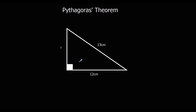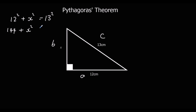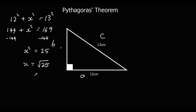Here's a different example. The long side is C, and the other two are A and B. So 12 squared plus x squared equals 13 squared. 12 squared is 144 and 13 squared is 169. So 144 plus x squared equals 169. Take 144 from both sides: x squared equals 25. Then x is the square root of 25, which is 5. So x is 5 centimeters.